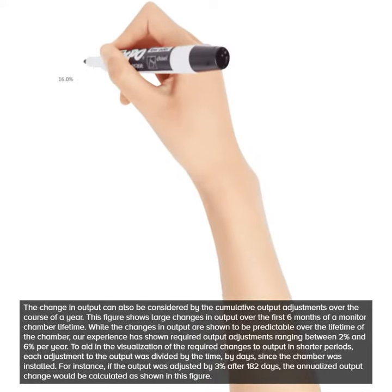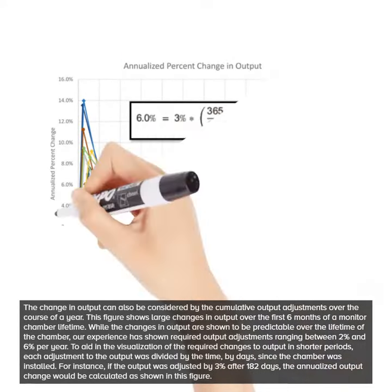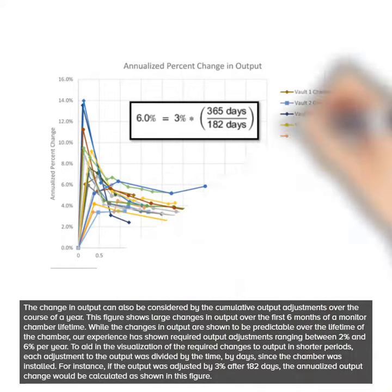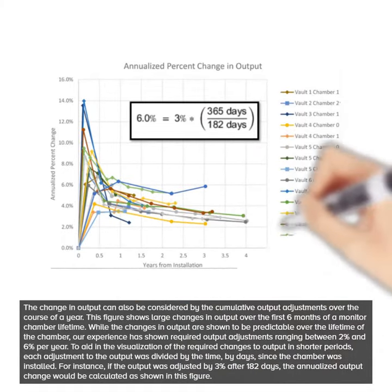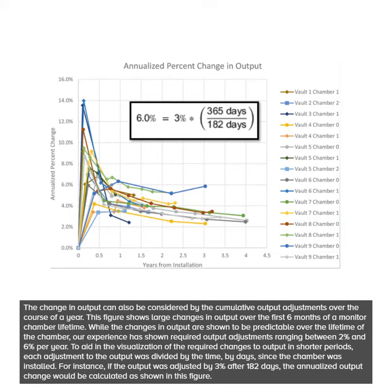The change in output can be considered by the cumulative output adjustments over the course of a year. This figure shows large changes in output over the first 6 months of a monitor chamber lifetime. While the changes in output are shown to be predictable over the lifetime of the chamber, our experience has shown required output adjustments ranging between 2% and 6% per year.